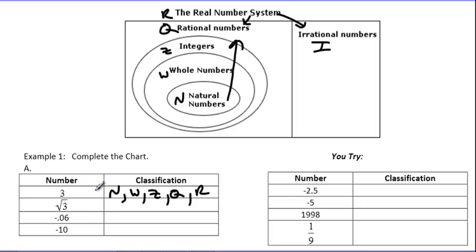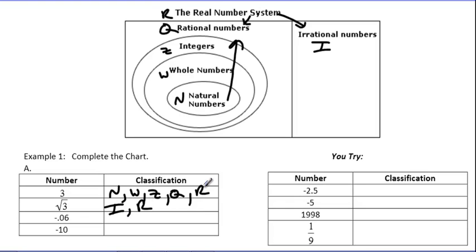Now the square root of 3 — type this into your calculator. You find out the square root of 3 is some random decimal that goes all the way to the end of the screen. It goes to the end because the screen has to stop and get rounded at some point. Because it's not repeating and goes all the way to the end, that's your key that it's an irrational number. So irrational numbers are I, but they're still R — everything's going to be R.